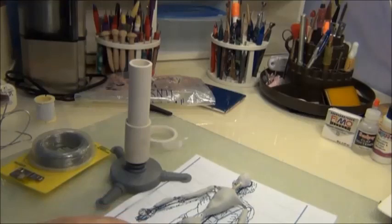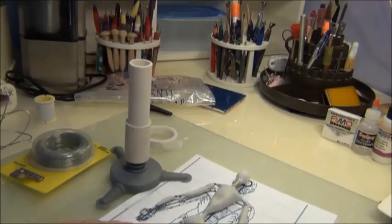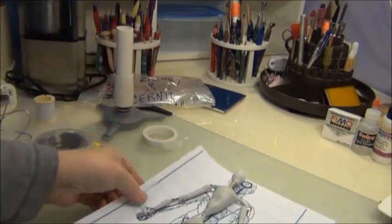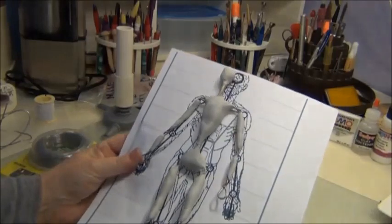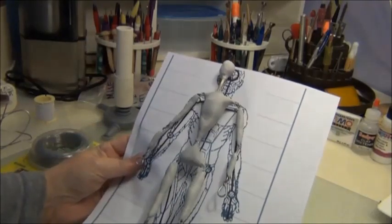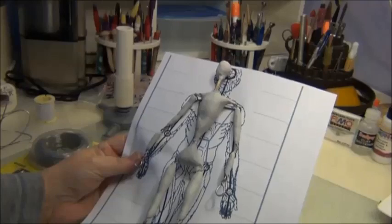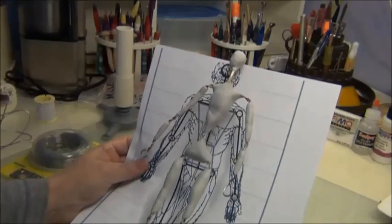And as I go along when I'm adding the clay onto this I'll continuously compare my sculpture to my little armature map which also has the musculature shown on here. So that my proportions stay pretty close to a typical human.